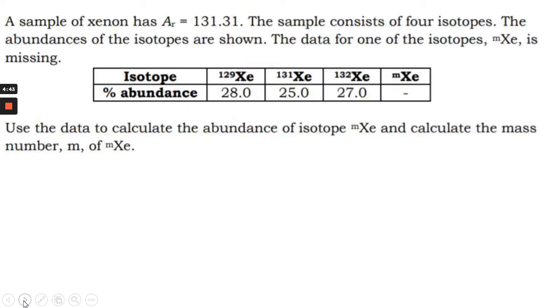So here's an example of that type of question. It says, a sample of Xenon has a relative atomic mass of 131.31. So normally that's the value you'd have to work out. This time they've given you the data and they've taken a piece of data out. So one of the isotopes, this data is missing.